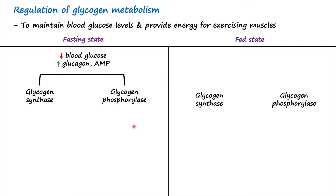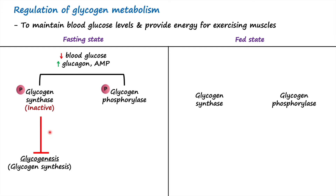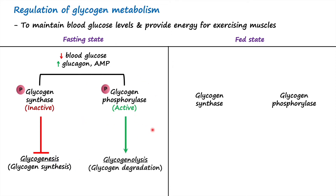During the fasting state, both glycogen synthase and glycogen phosphorylase enzymes are phosphorylated. When glycogen synthase is phosphorylated it is considered inactive, and therefore the pathway of glycogenesis is inhibited. On the other hand, when glycogen phosphorylase is phosphorylated it is considered active, and therefore glycogenolysis is upregulated.